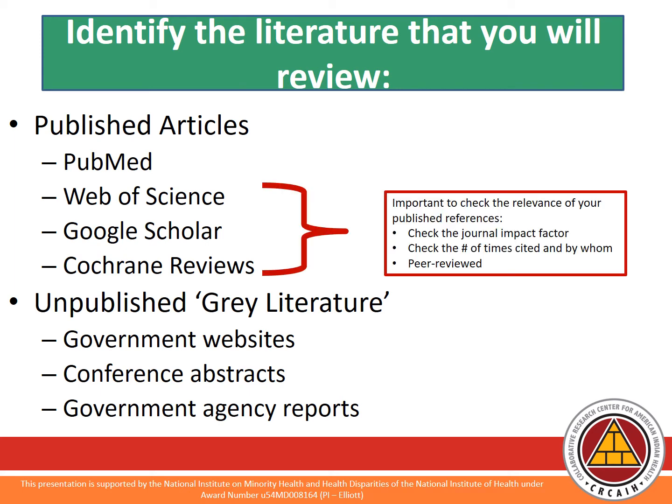It is important to always check the relevance of your published references. You can do this by checking the journal impact factor — a measure of how often articles in a journal are cited — and whether the journal is peer-reviewed. This information is accessible on the journal's website, and certain resources such as Web of Science and Google Scholar can check the number of times an article is cited and by whom. Another option outside of published literature is unpublished gray literature — information found through government websites, conference abstracts, and government agency reports, such as reports or statistics available on your state health department's webpage. This information is not necessarily published in a peer-reviewed journal, but it is a validated source of information that may provide more specific information related to your topic and should be considered as an acceptable resource to review.